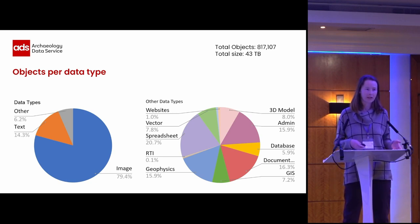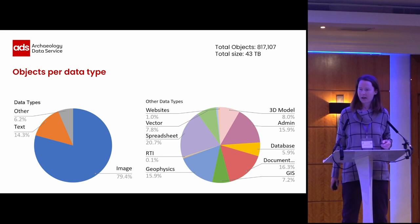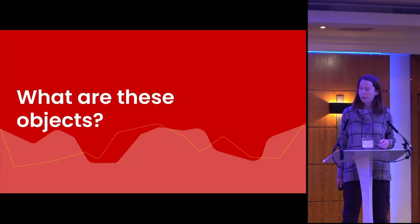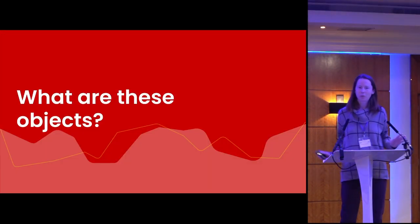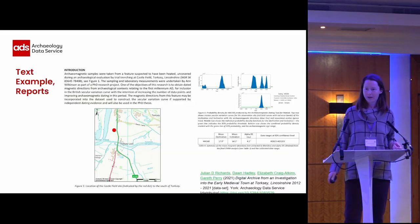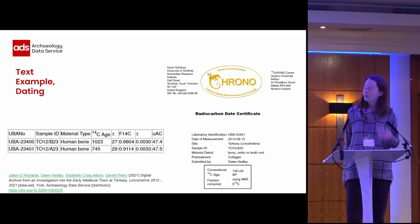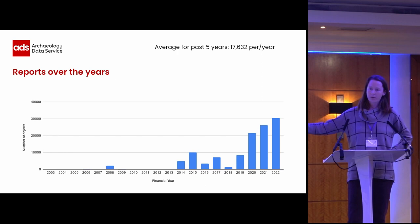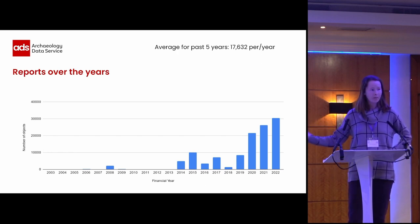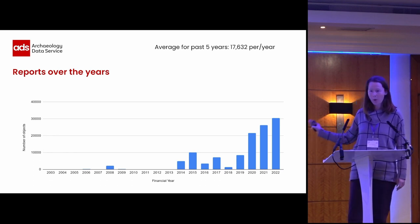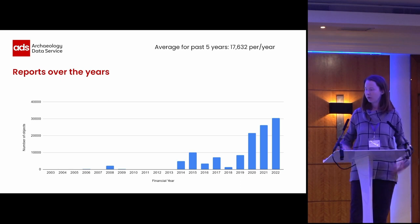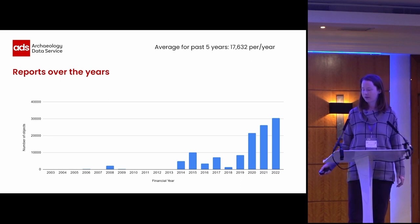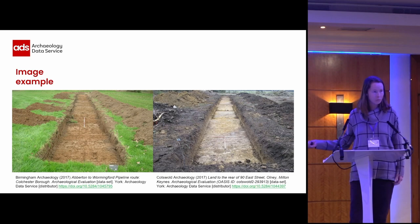If we look at what's actually in each of these archives and the specific data types, you can see that most of these are images and text, but we do have a variety of other types of data. To make sure we're all on the same page, this is what a report looks like — but we get more than just reports for text, such as dating examples. Over the years we've gotten quite a large amount of text data, primarily through OASIS and other methods of ingest.